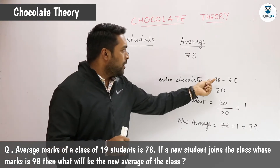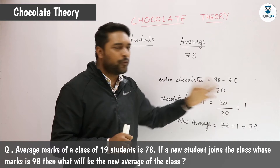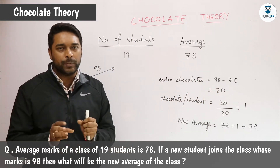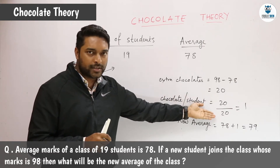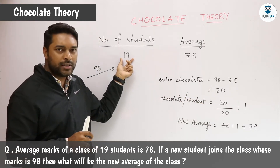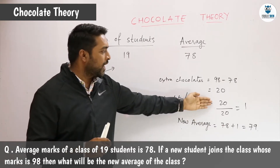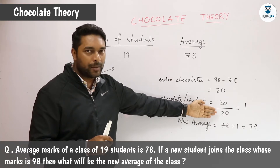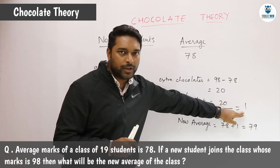Out of 98, he will keep 78 chocolates with himself. Now he will have 20 chocolates extra. So he will distribute these extra chocolates among all the students including him. Earlier there were 19 students; now including him there will be 20 students. So the extra 20 chocolates will be distributed among 20 students, so each of them will get 1 chocolate.